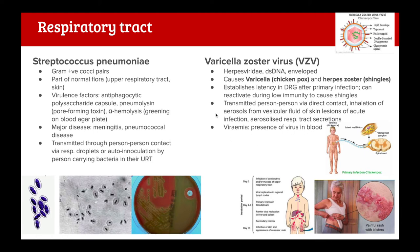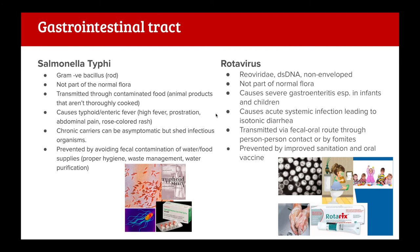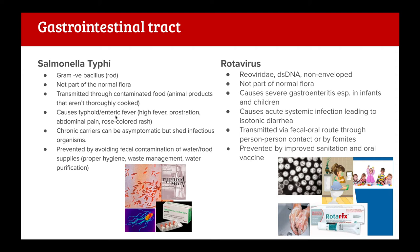Salmonella typhi: a gram-negative bacillus not normally found in normal flora. It's transmitted through contaminated food, especially animal meats, which is why thorough cooking is important. It causes typhoid fever, also known as enteric fever, characterized by high fever, prostration, abdominal pain, and a rose-colored rash. People can be chronic asymptomatic carriers who are still infectious because they're still shedding. Prevention involves avoiding fecal contamination of water and food supplies through proper hygiene, waste management, and water purification.